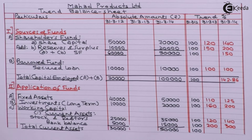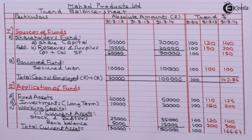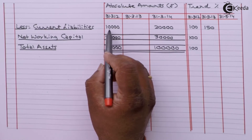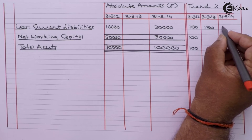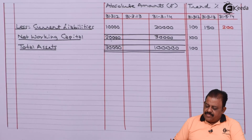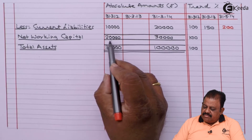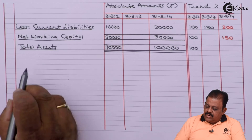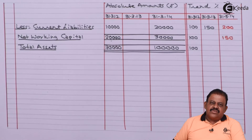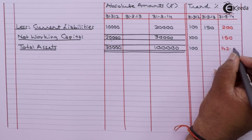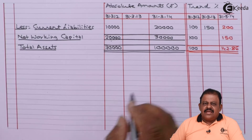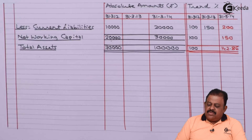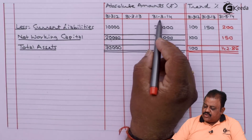Total current assets: 50,000 divided by 30,000 multiplied by 100 equals 150. Total assets: 1,00,000 divided by 70,000 multiplied by 100 equals 142.86, rounded off to 143. So we have calculated all trend percentage values for the year 31st March 2014.